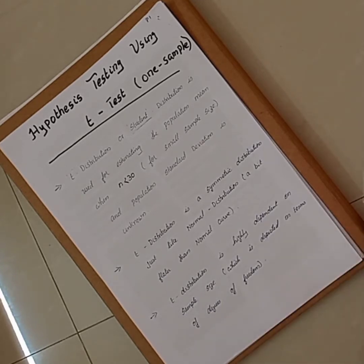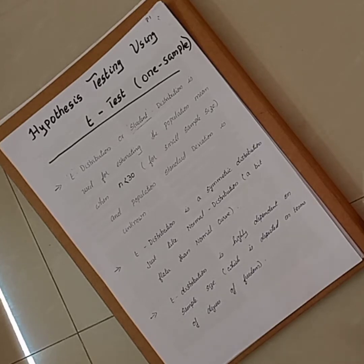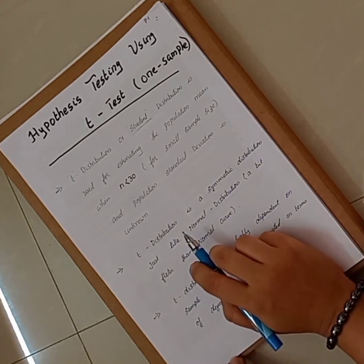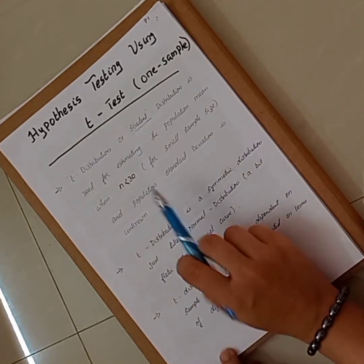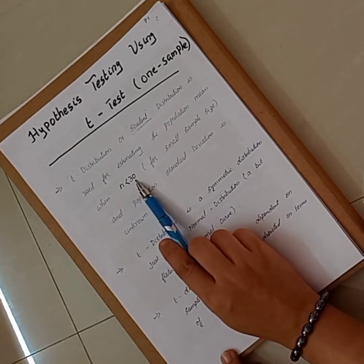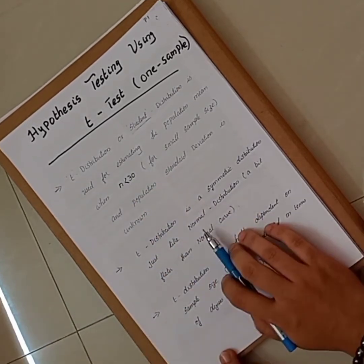Whenever you get a particular question and once you examine the sample size, if it is less than 30, you need to understand that it is T-distribution. If it is greater than 30, you need to go for Z-test or Z-distribution.